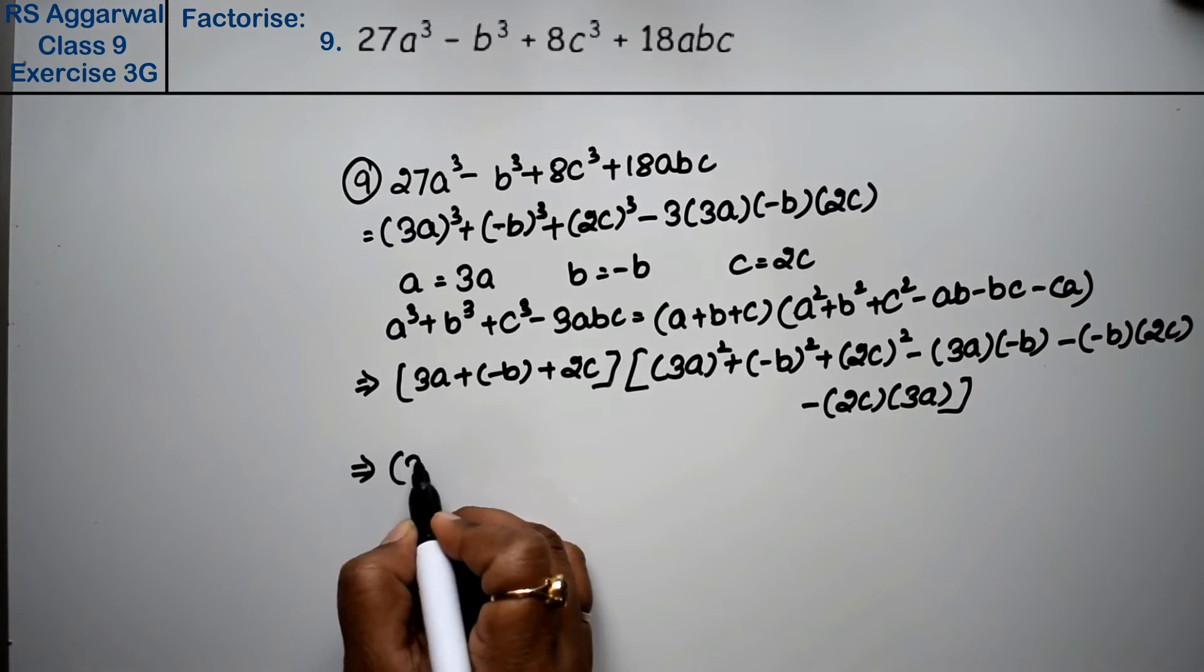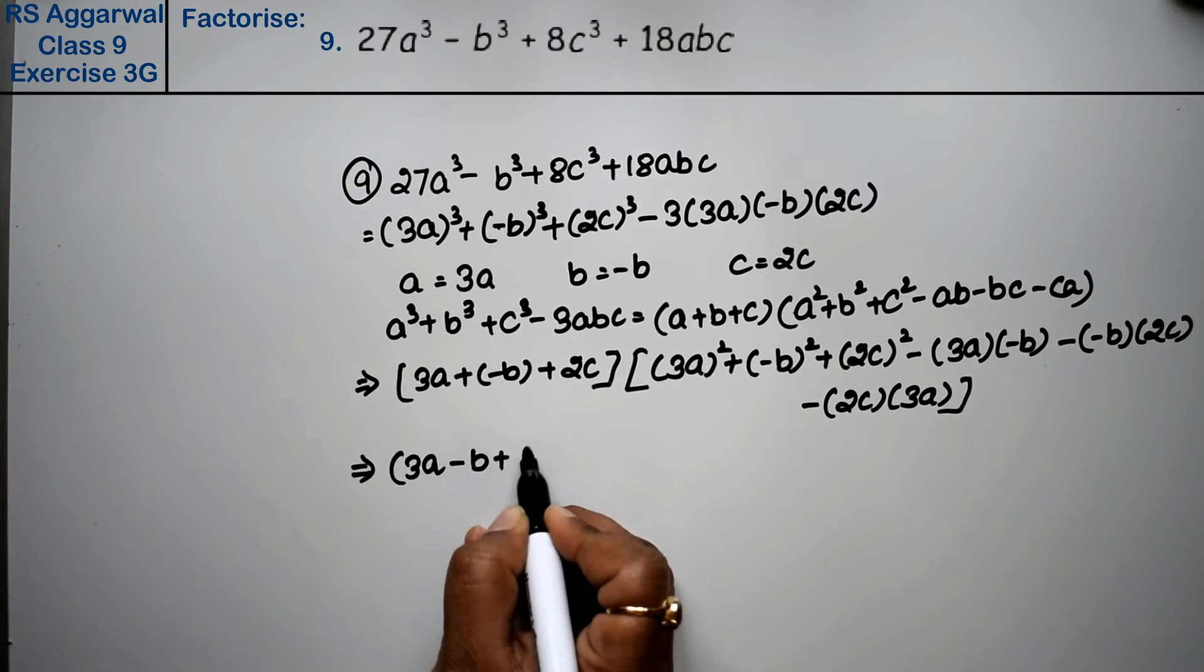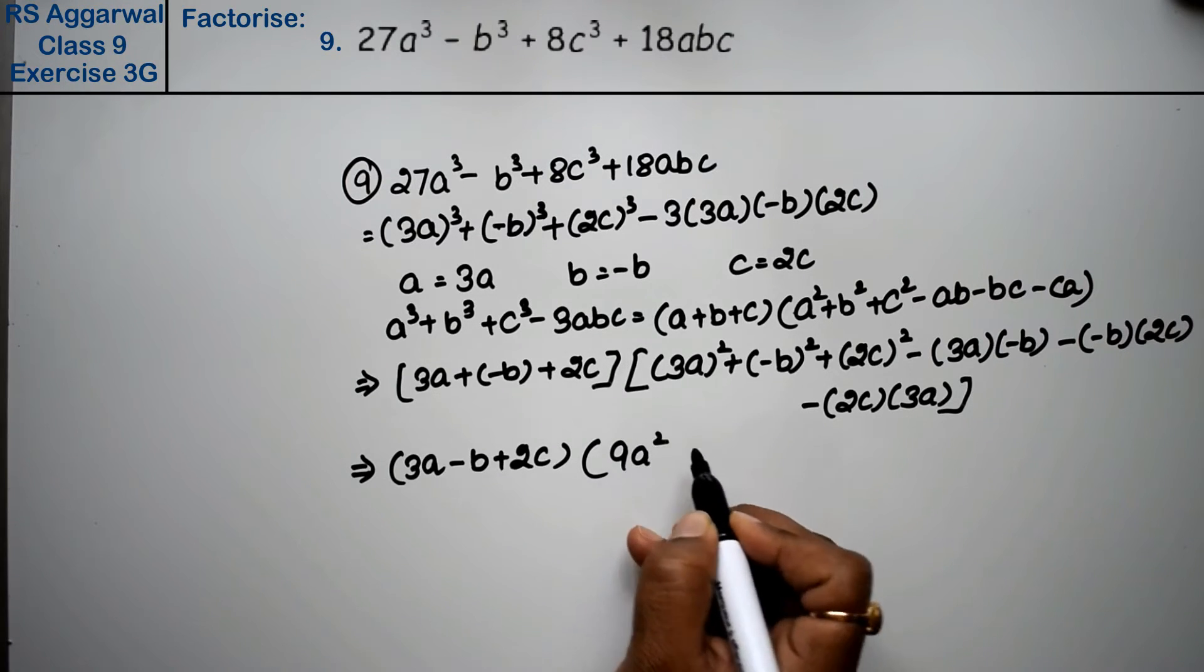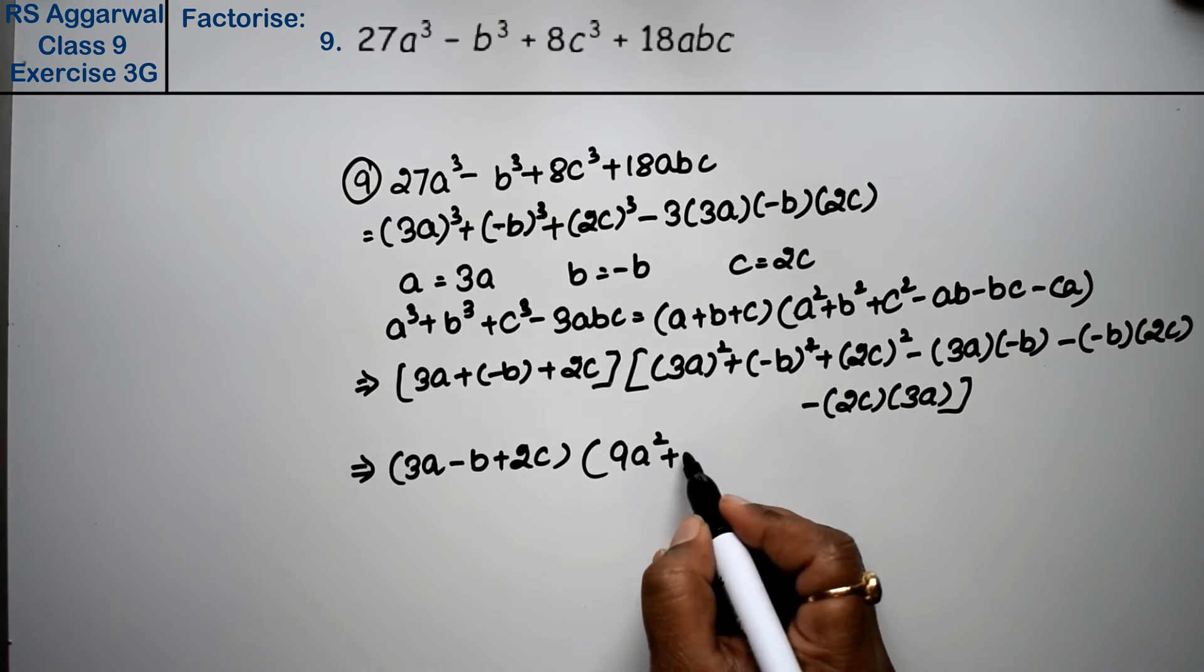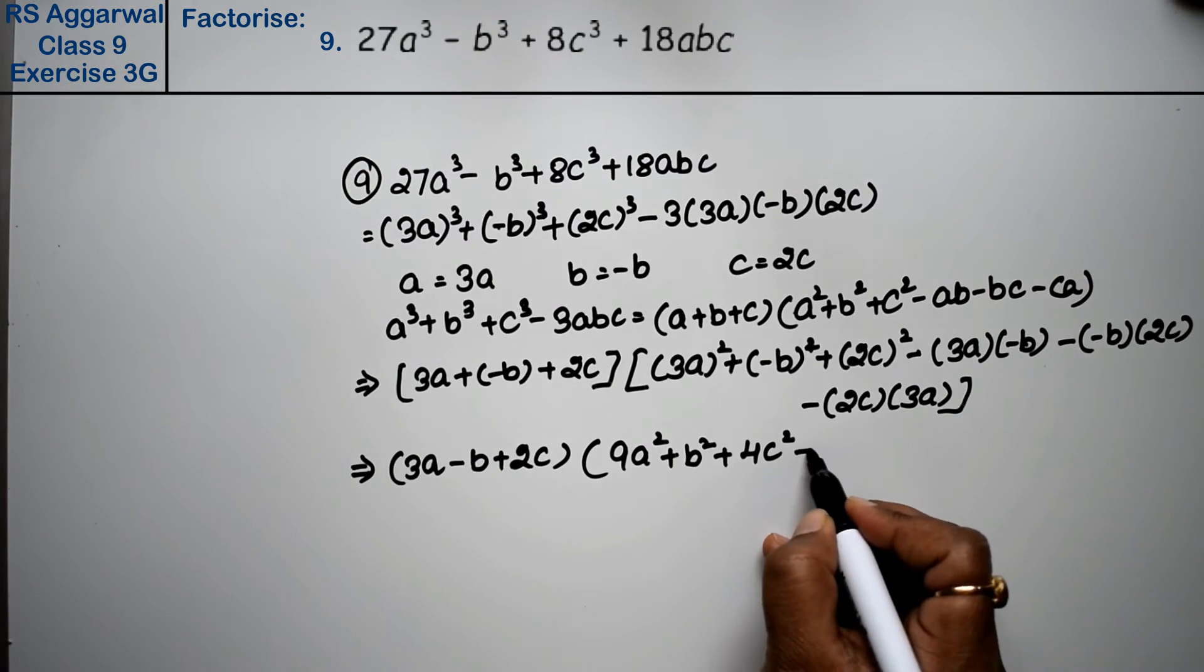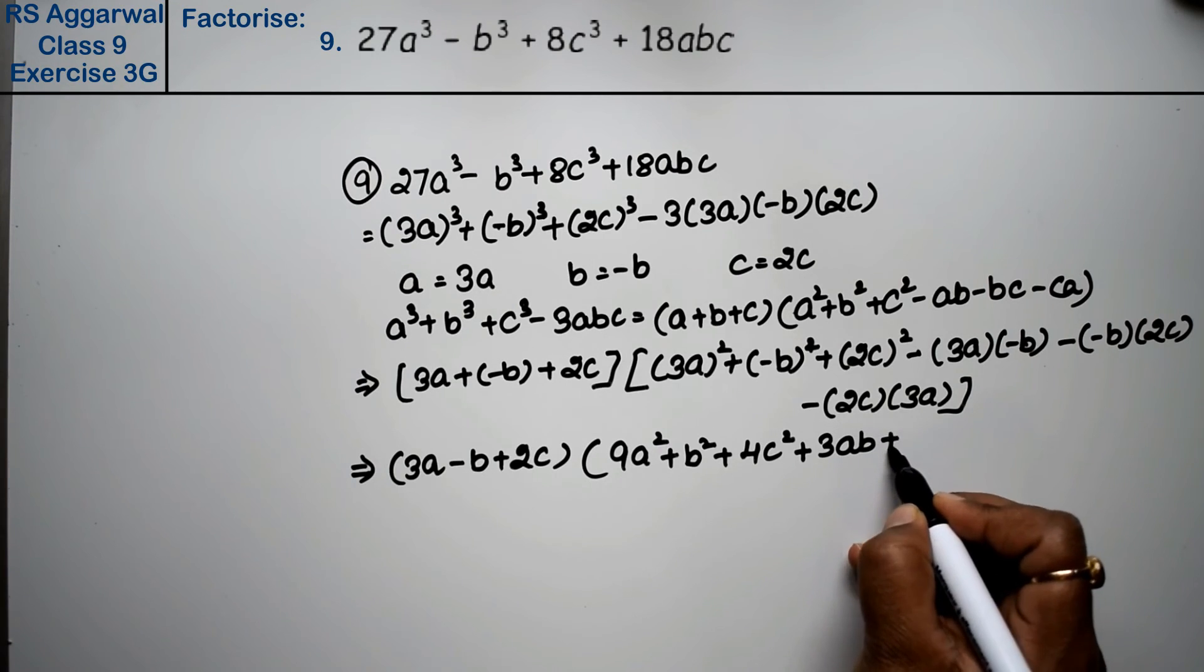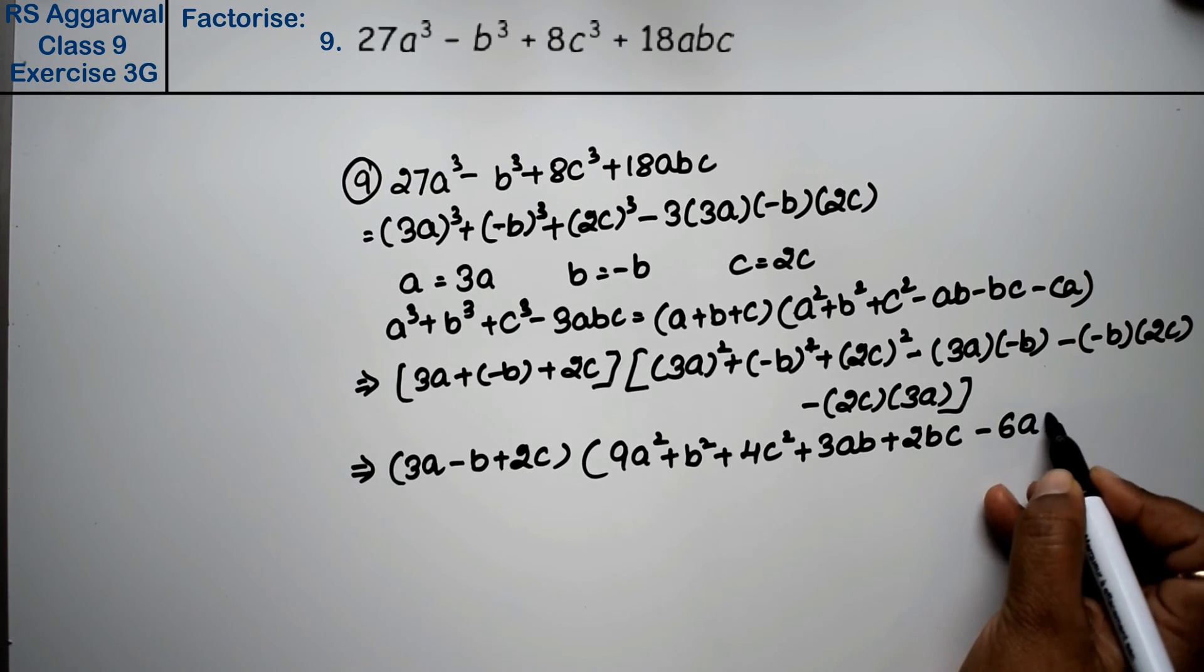Now we open the bracket: (3a - b + 2c)(9a² + b² + 4c² - 3ab + 2bc - 6ac) is the answer. Why minus minus plus? Because of the square.